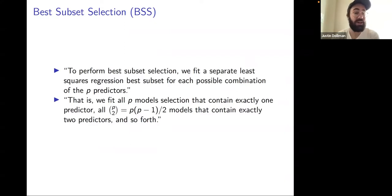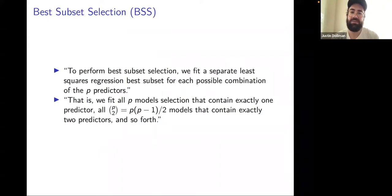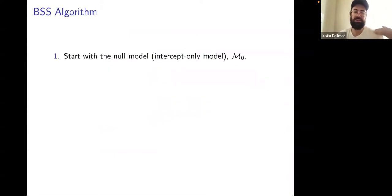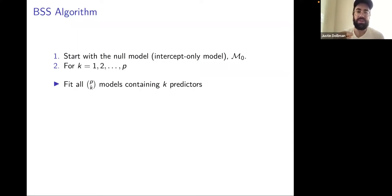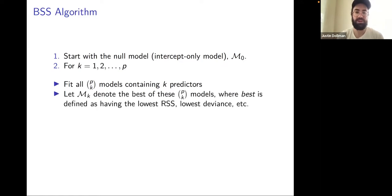To recapitulate: you start with the null model — intercept only — denoted M-sub-zero. Then, for each value of K indexed over the number of predictors, you fit P-choose-K models at each step containing K predictors. Whichever one is the best, you denote M-sub-K. 'Best' changes depending on the model type: lowest residual sum of squares for a linear model, or lowest deviance for a Poisson or logit model.